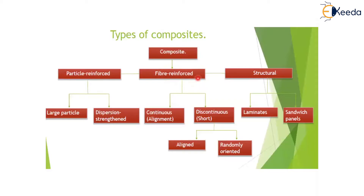The fiber reinforced composite material is divided into continuous and discontinuous. Continuous means a long thread is used as reinforcement, represented as a continuous fiber reinforced composite material. Discontinuous means short fibers are used, represented as a discontinuous fiber reinforced composite material.